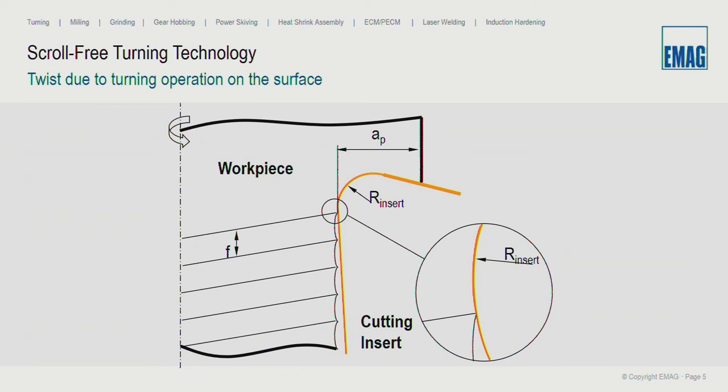Now let's start with surfaces and requirements for sealing seats. Here you can see what a twist on the surface from a turning operation means. With the radius of the insert together with the feed rate, you will get some creases which means a twist on the surface. These creases are like a worm screw or worm gear and support dust or oil depending on the rotation direction in or out of the sealed area.